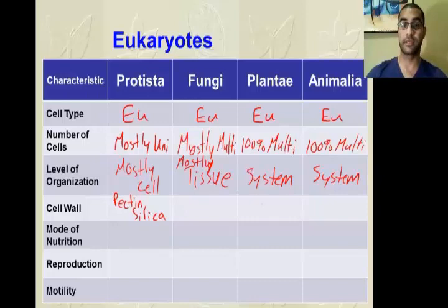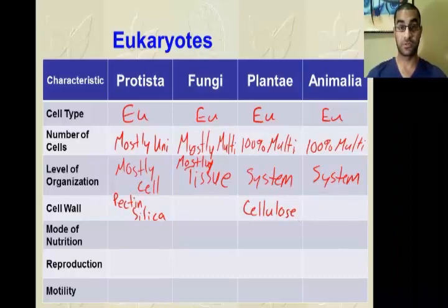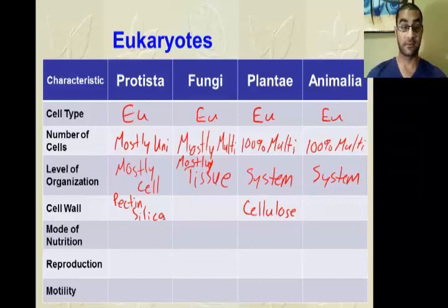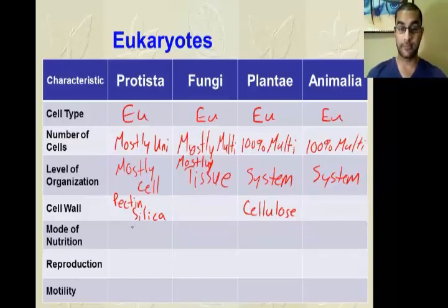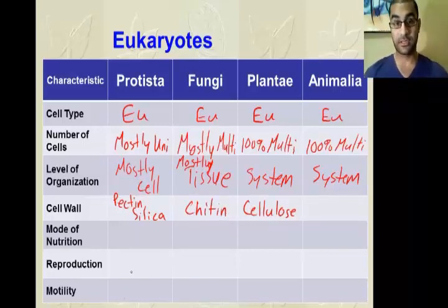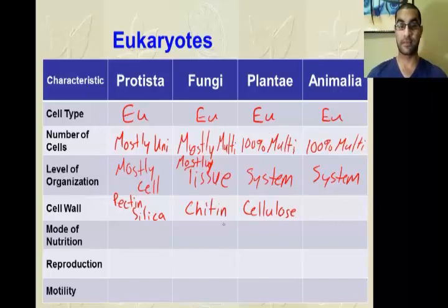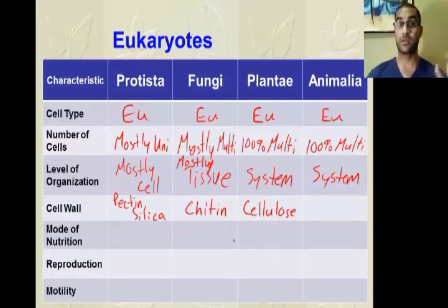Cellulose is something you might think is only found in plants, but some protists also have cellulose. Pectin and silica, however, won't be anywhere else — those are specific to Protista. Kingdom Fungi has a unique structure called chitin — C-H-I-T-I-N — in their cell walls. If you ever hear 'chitin cell walls,' automatically go to kingdom Fungi. Don't deviate from that.